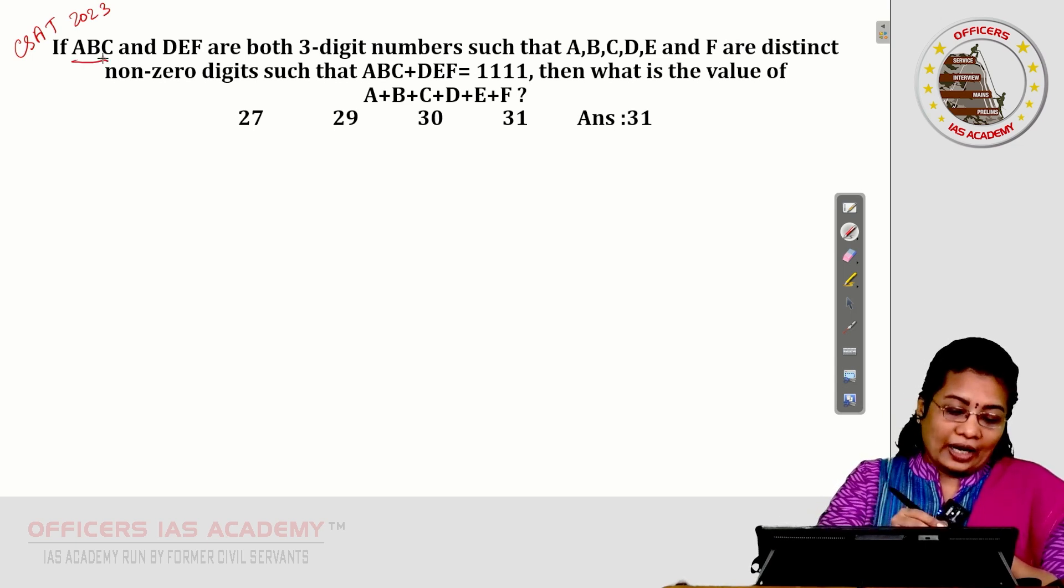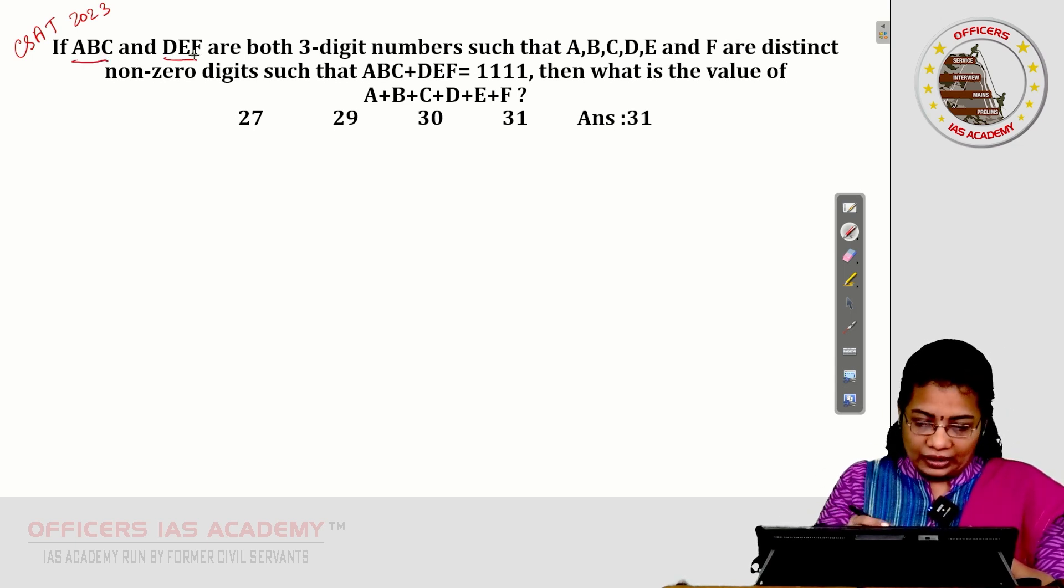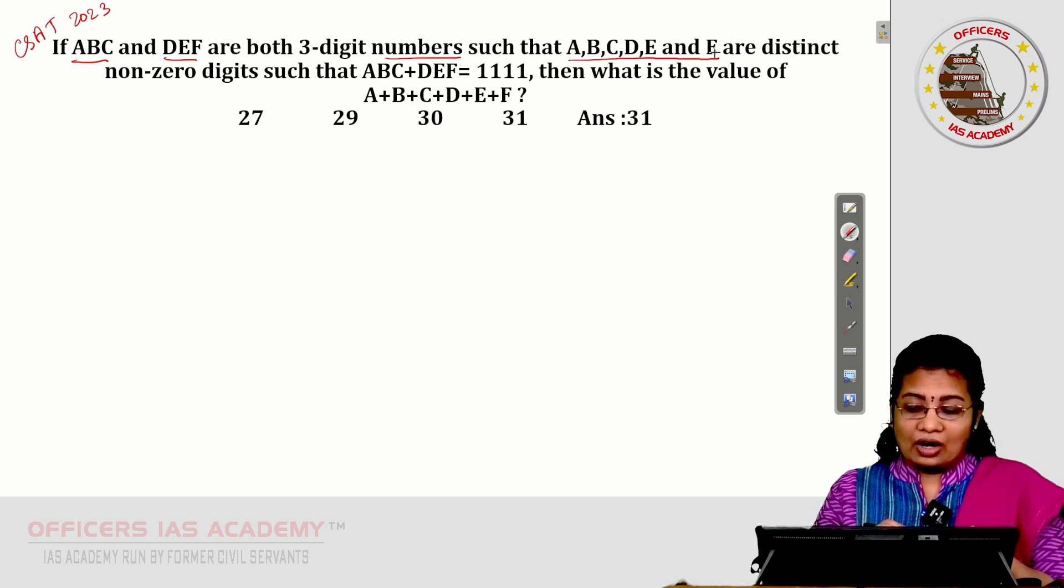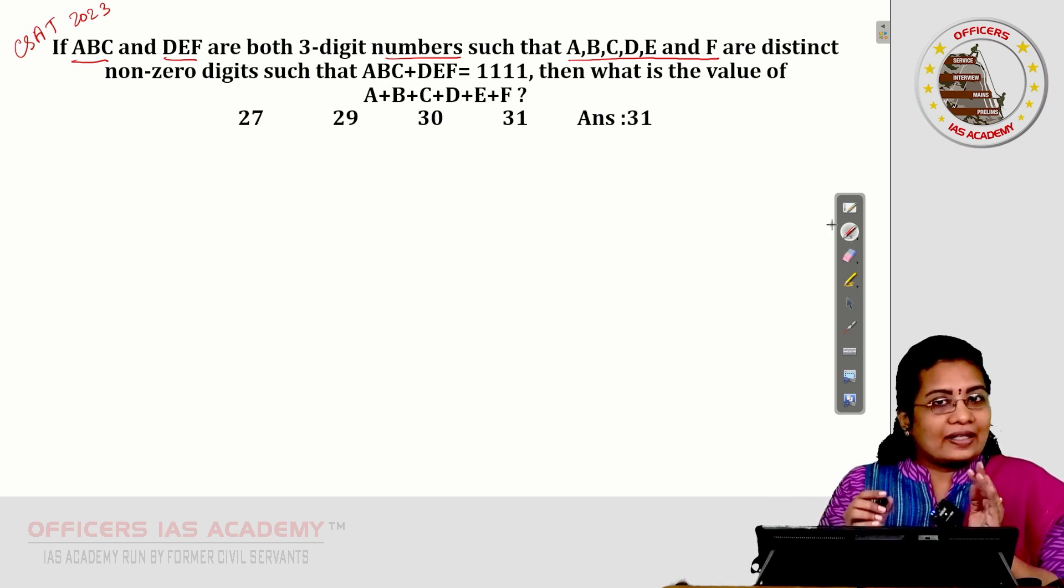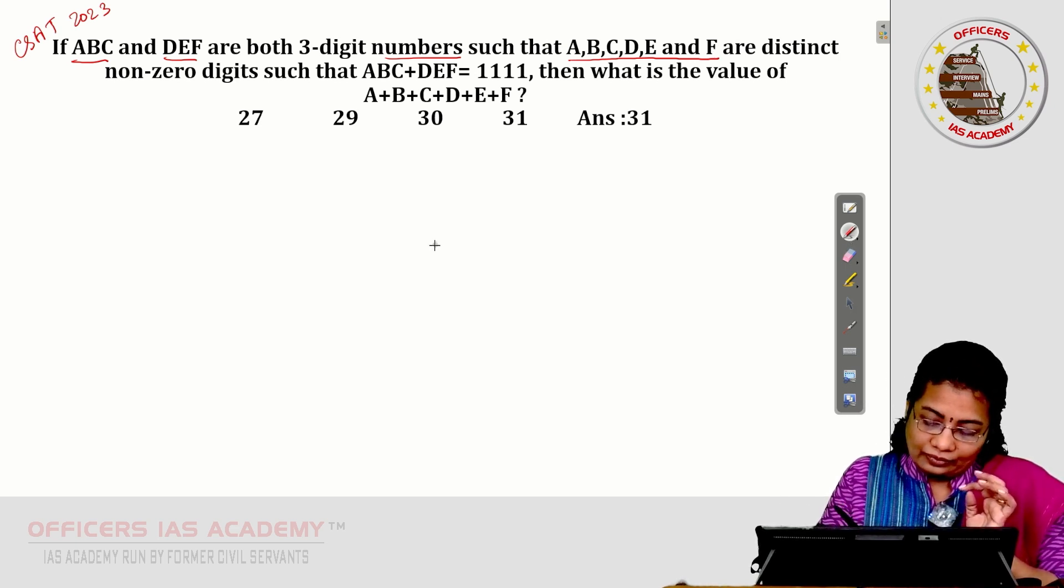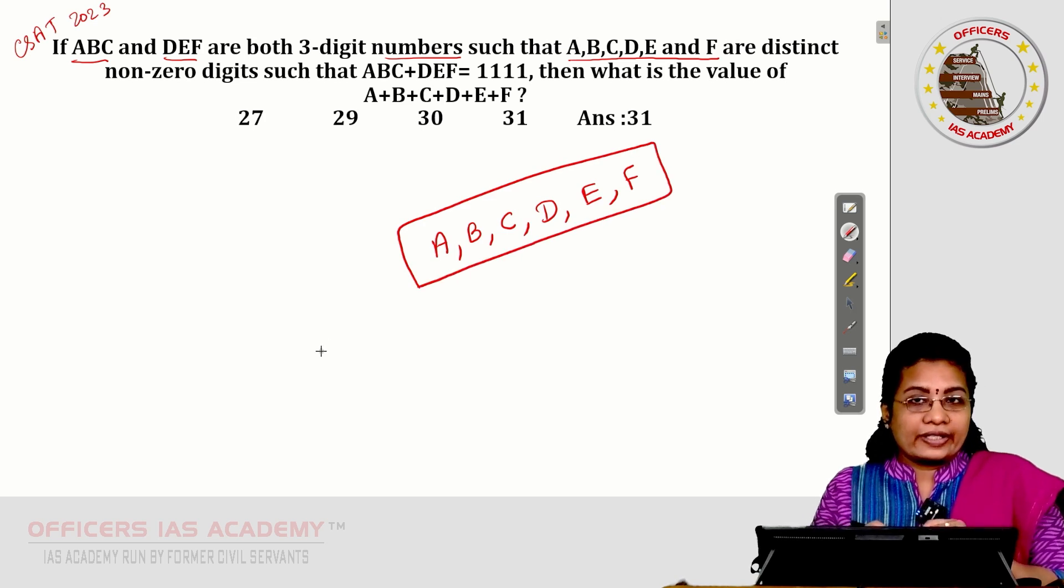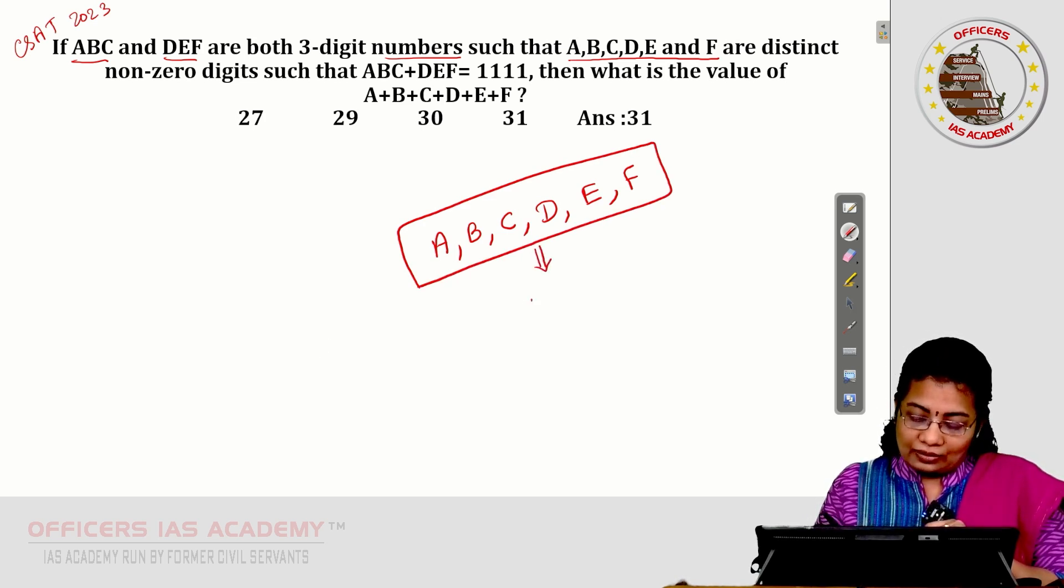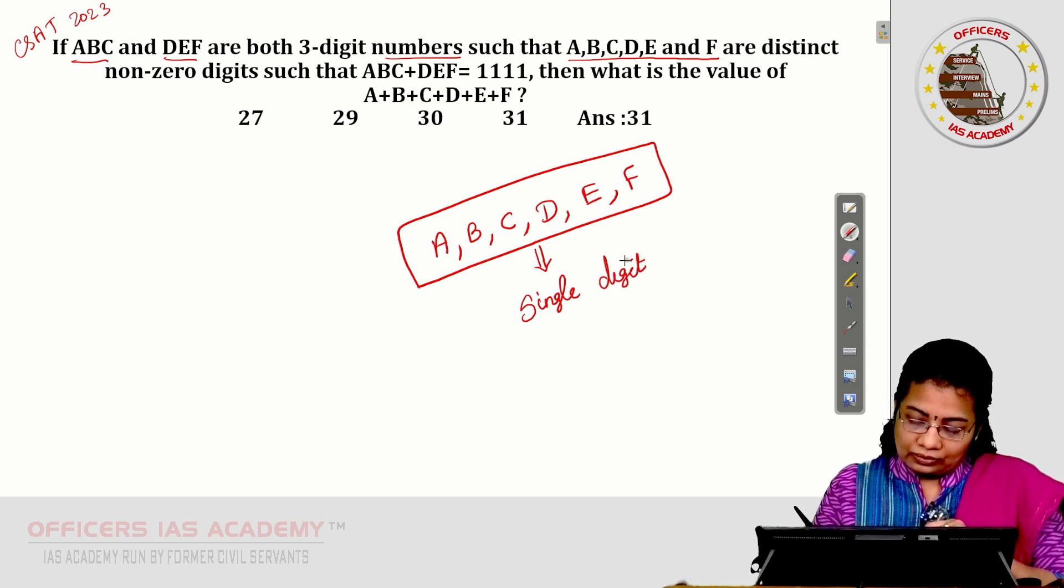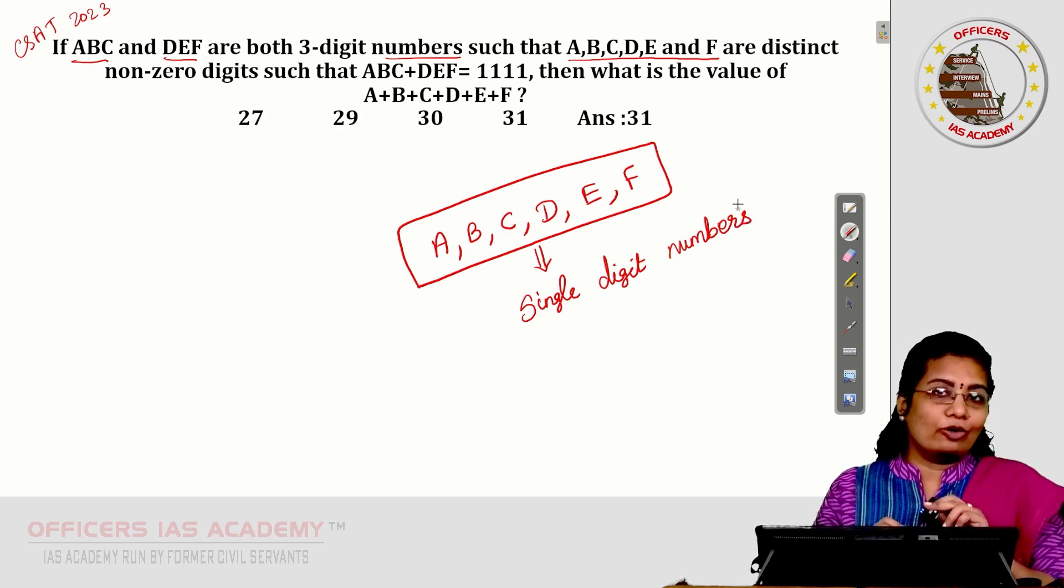If ABC and DEF are both three-digit numbers such that ABCDEF are distinct non-zero digits. All are single-digit numbers and they are also non-zero digits.